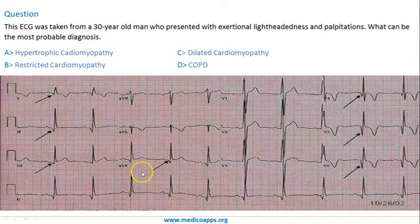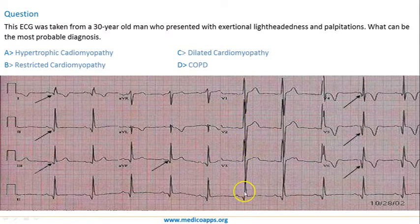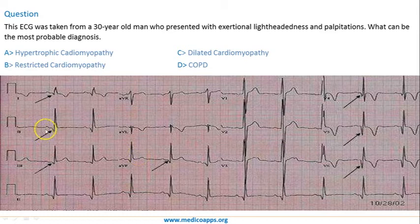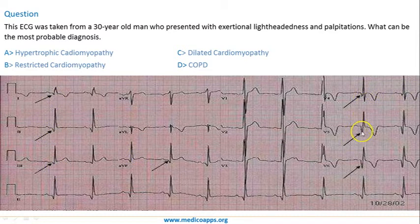The first characteristic finding we can see is very high voltage QRS complexes — it's almost difficult to ignore. The second thing you see is the Q waves. In each of the ECG leads, if you see these Q waves, they are almost what you can describe as dagger-like.